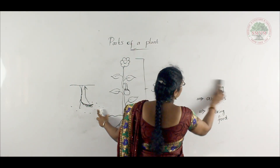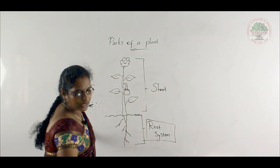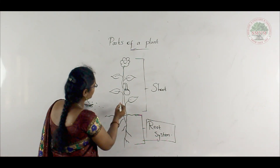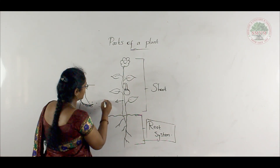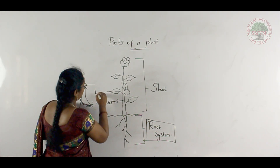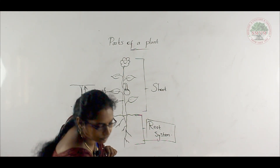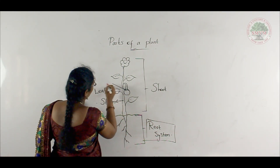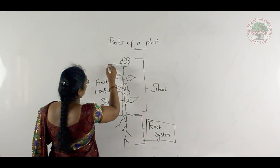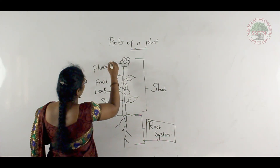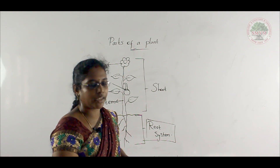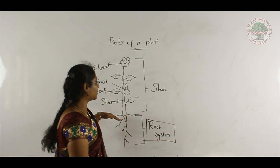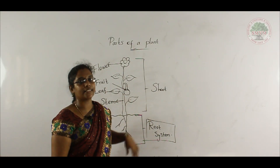The next part is the shoot system — the part present above the soil. The shoot system contains different parts: stem, leaf, fruit, and flower. We will discuss the shoot system in our next class. Thank you so much, children.